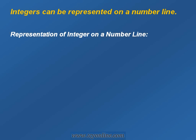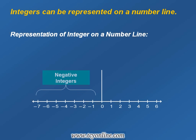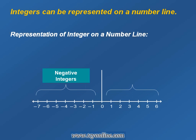Now we shall see the representation of integers on the number line. On the left-hand side of the origin we can see negative integers, and on the right-hand side of the origin positive integers can be seen.